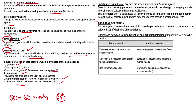Punctuated equilibrium explains the speed at which evolution takes place. Evolution involves long periods of time where species do not change — they stagnate or change very slowly through natural selection; this is known as equilibrium. This is alternated — or punctuated — by short periods of rapid change through natural selection, during which new species may form in a short period of time.